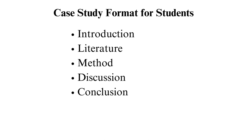The method section describes why you chose a certain subject or case, the technique used, and why it is the best approach to address the research problem. Methods vary depending on whether the subject is an event, person, place, or phenomenon. The discussion section interprets and concludes the research analysis, combining a description of the results with a discussion about their impacts on the research.